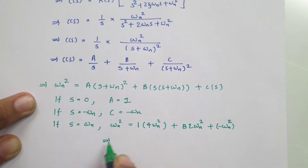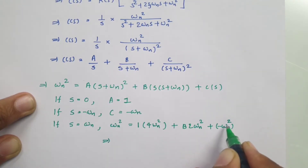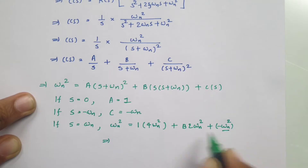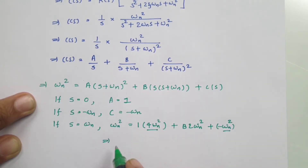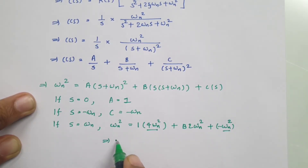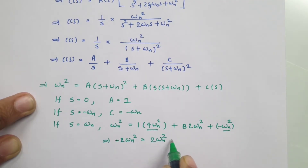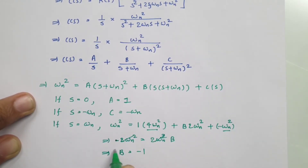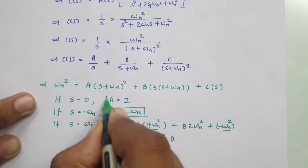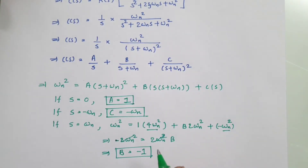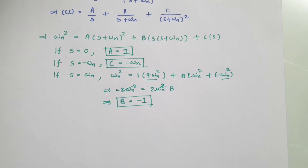Simplifying to find B: omega_n squared minus 3 omega_n squared equals 2 omega_n squared times B, so minus 2 omega_n squared equals 2 omega_n squared times B, which gives B equals minus 1. We now have all three values: A equals 1, B equals minus 1, and C equals minus omega_n. We can now apply the inverse Laplace transform.